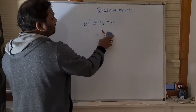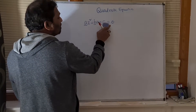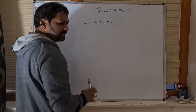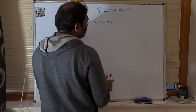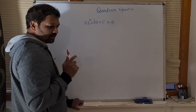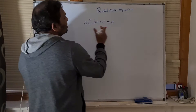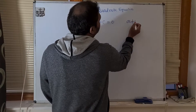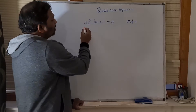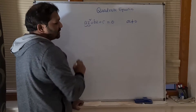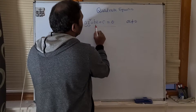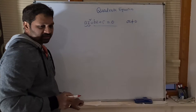A, B, and C are constants. Also, another condition is that A should not be 0. If A becomes 0, the whole term becomes 0 and it becomes a linear equation — you are left with only the Bx + C part. Then this is a linear equation.